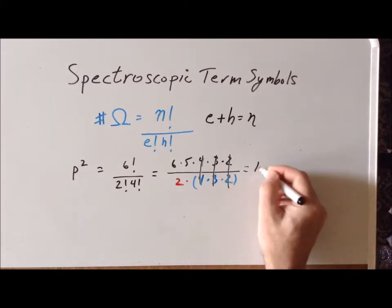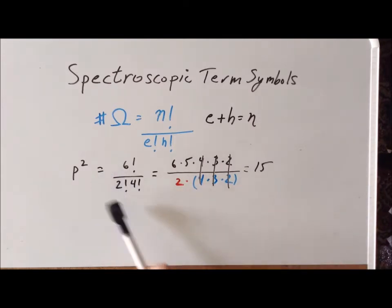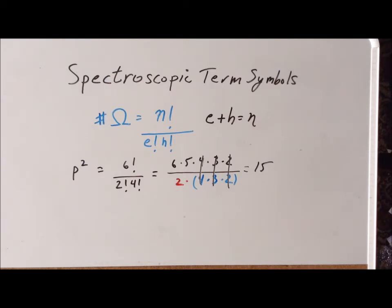This tells us that when deriving the spectroscopic term symbols for a p2 configuration, we will need to derive 15 microstates. The nature of this formula is such that we must always get a whole number answer. If we do not get a whole number answer, that means we've made a mistake and we need to go back and double check our computation.